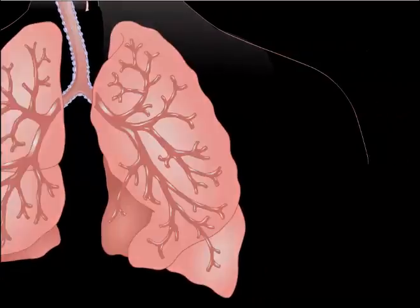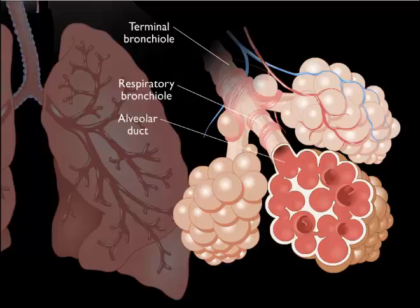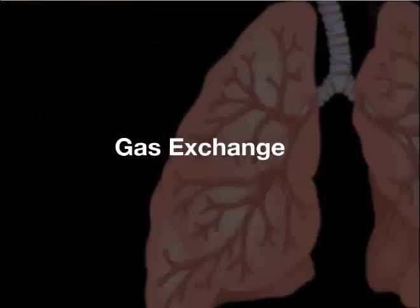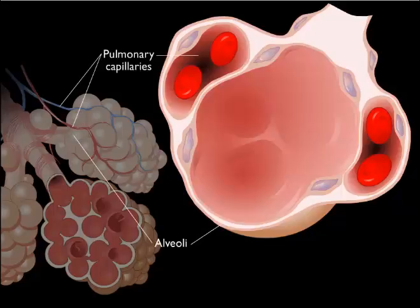Each terminal bronchiole divides repetitively to form respiratory bronchioles, alveolar ducts, and alveolar sacs. Each alveolar sac is formed by a group of alveoli. Alveoli are surrounded by pulmonary capillaries. The ultra-thin walls of the alveoli and capillaries serve as a surface for gas exchange between the air and blood.